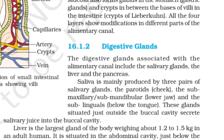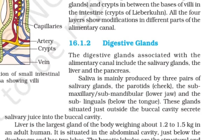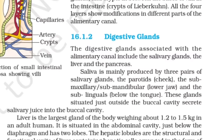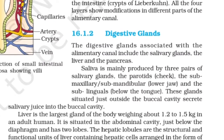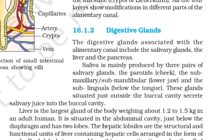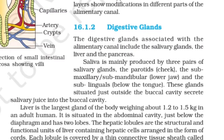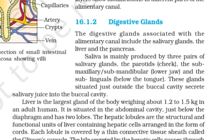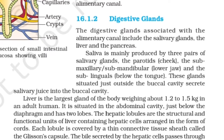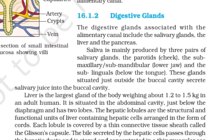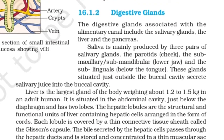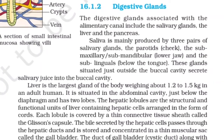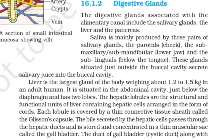The liver is the largest gland of the body, weighing about 1.2 to 1.5 kg in an adult human. It is situated in the abdominal cavity just below the diaphragm and has two lobes. The hepatic lobules are the structural and functional units of the liver, containing hepatic cells arranged in the form of cords. Each lobule is covered by a thin connective tissue sheath called the Glisson's capsule.